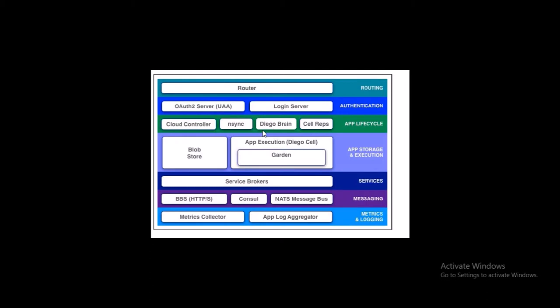Next, let's discuss Diego Brain components. Diego Brain's components distribute tasks and long-running processes to Diego Cells and track any discrepancy between actual long-running processes and desired long-running process counts to ensure fault tolerance and long-term consistency. The nsync, PBS, and Rep components work together to keep applications running.